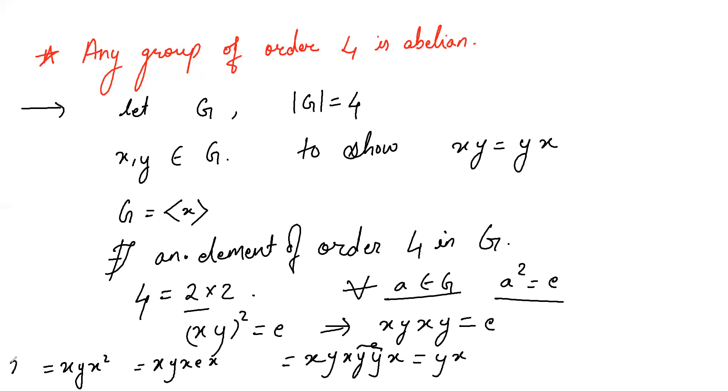And hence we have xy equal to yx for any x, y belongs to G. And hence we have proved that any group of order 4 is abelian. There are multiple ways to prove this statement.